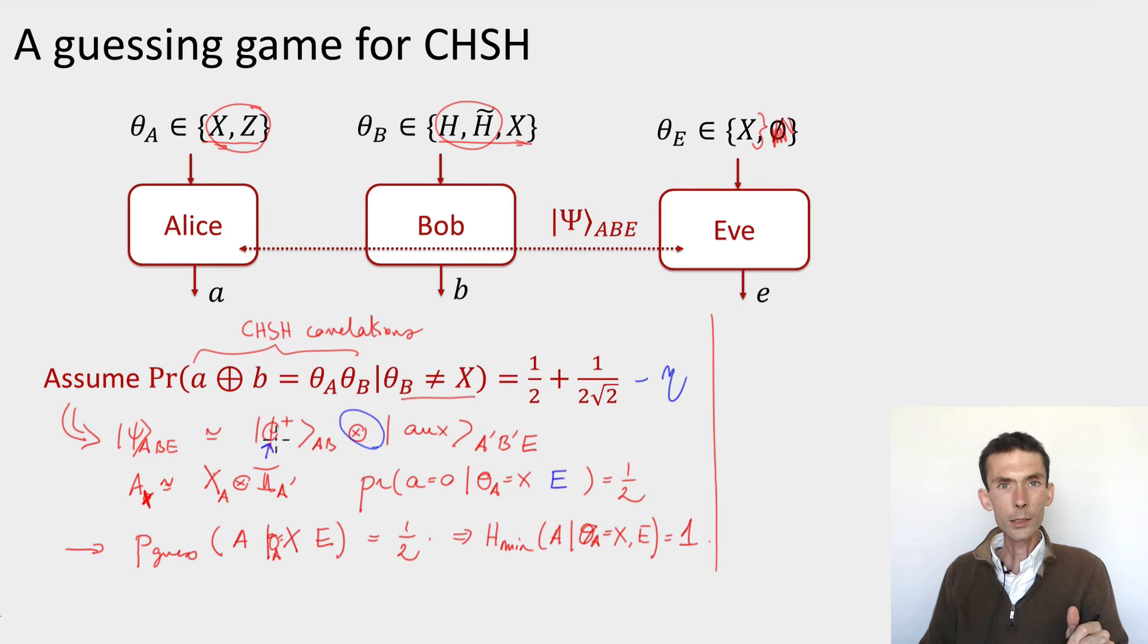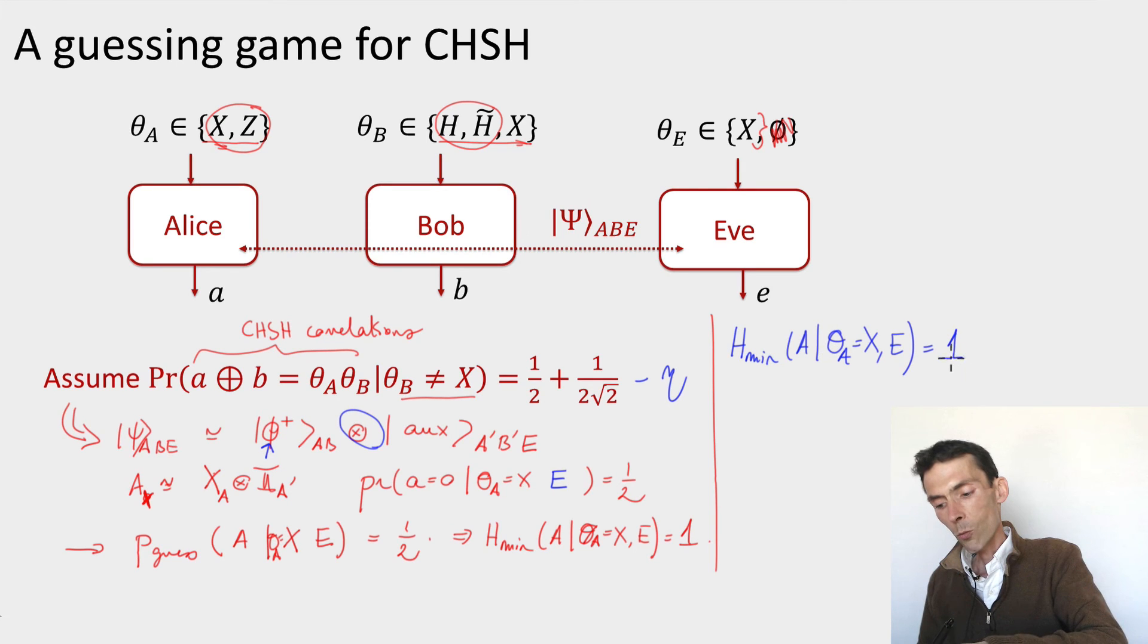And here you have to work out the details, and it's actually important to work out the details, because these will, in the end, govern the key rate, and they'll govern the efficiency of our protocol. Let me just tell you the result. The result that you can show is that the way the min entropy of Alice's output will scale is that you'll still get this one, but you'll get a dependency on eta that scales with the square root of eta. And it's important to figure out what the constant is here, but I'm not going to do it in this video. So to conclude,